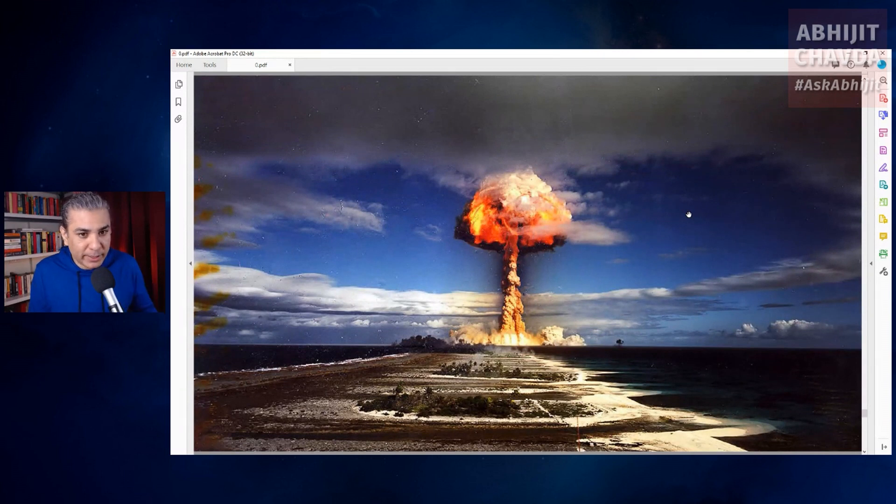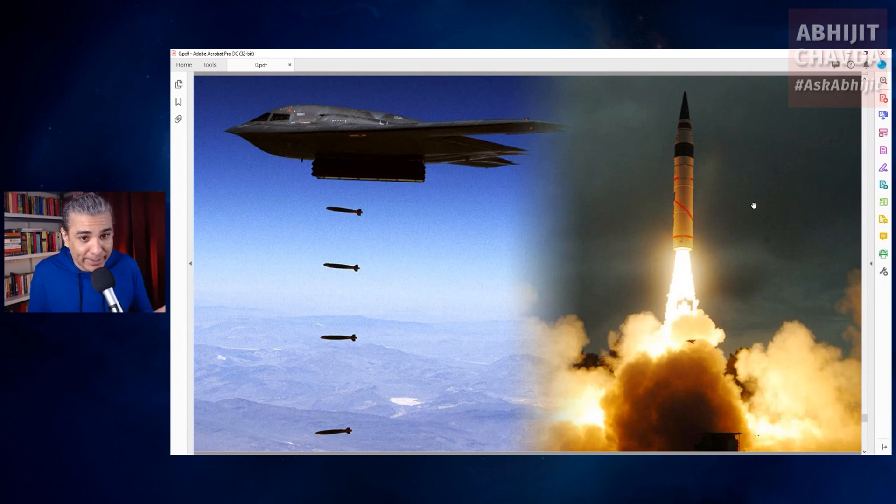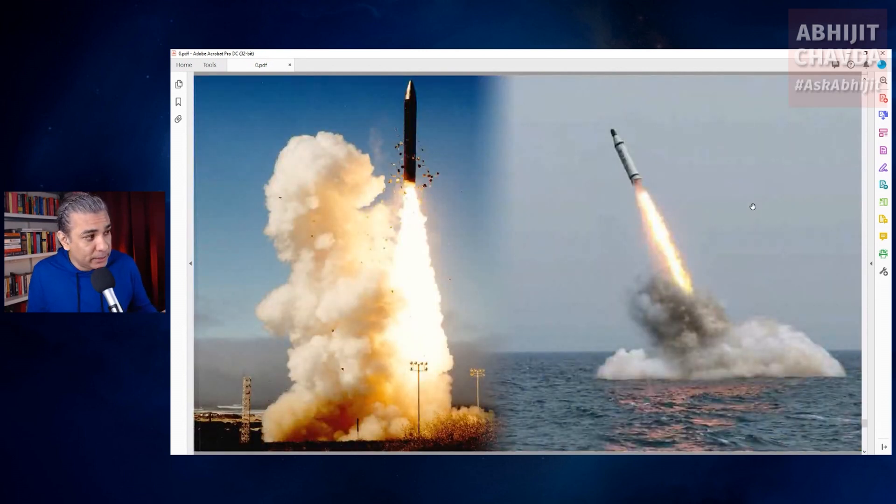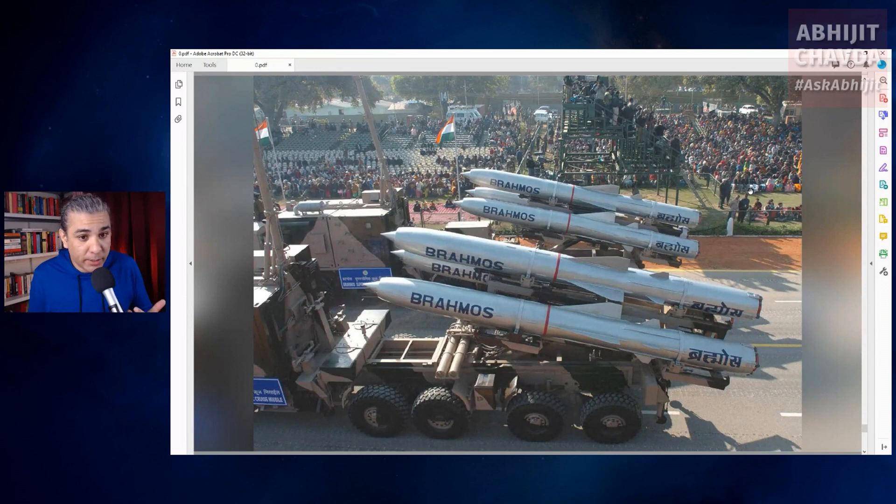Nuclear weapons can either be dropped from aircraft in the form of gravity bombs or they can be delivered by missiles. Ballistic missiles have very long ranges and they can be launched from land and submarines. Cruise missiles have shorter ranges than ballistic missiles but they are much harder to detect and intercept.